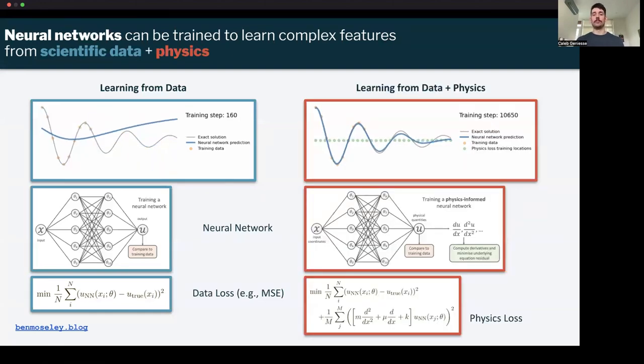More recently, people have started incorporating physics into the learning process, here taking an underlying equation and computing the derivatives, and then we can add this to the loss function as a soft constraint.